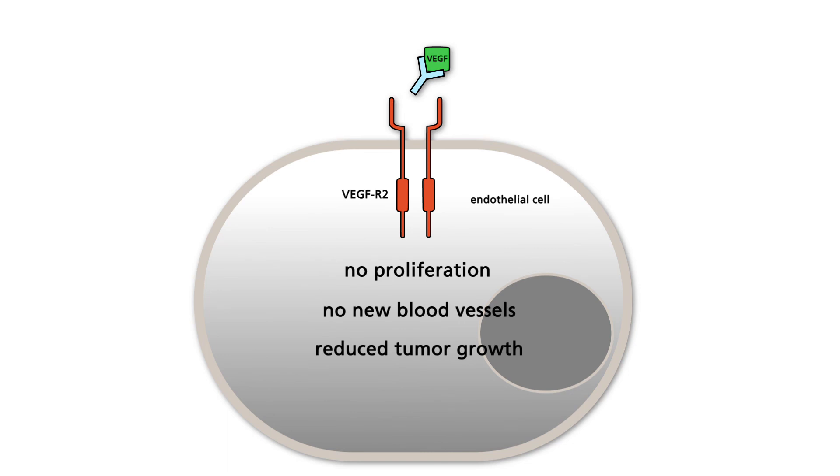In the presence of Bevacizumab, the binding of VEGF to its receptor is blocked. As a consequence, VEGF is unable to stimulate blood vessel formation. Because a growing tumor depends on new blood vessels for the supply of oxygen and nutrients, Bevacizumab inhibits tumor growth.